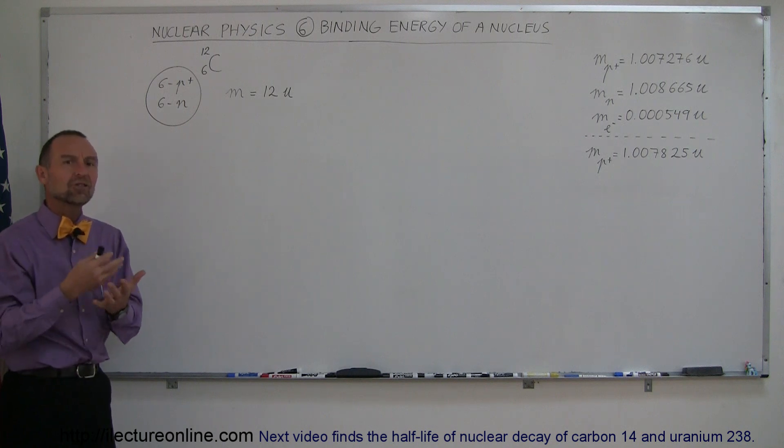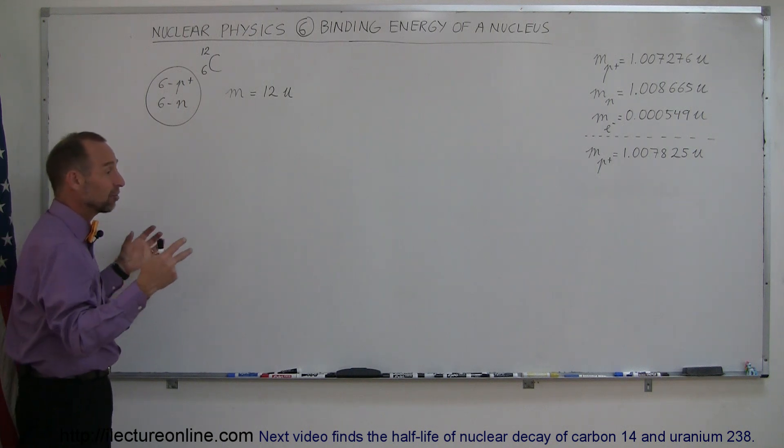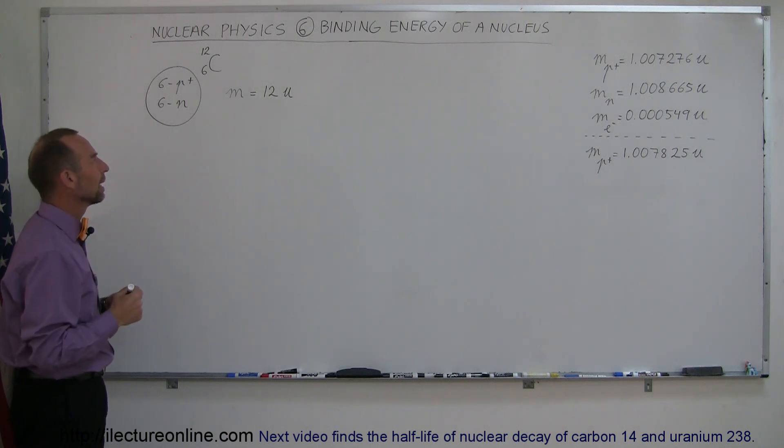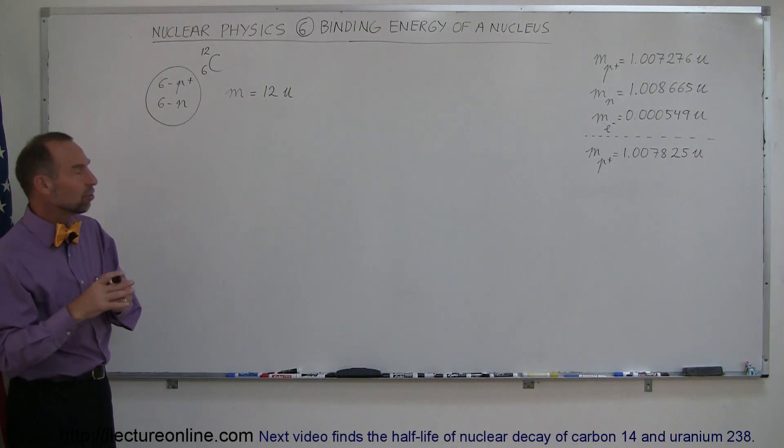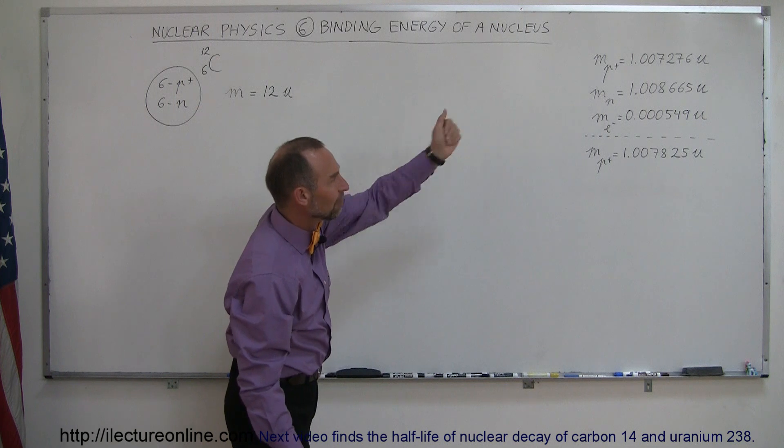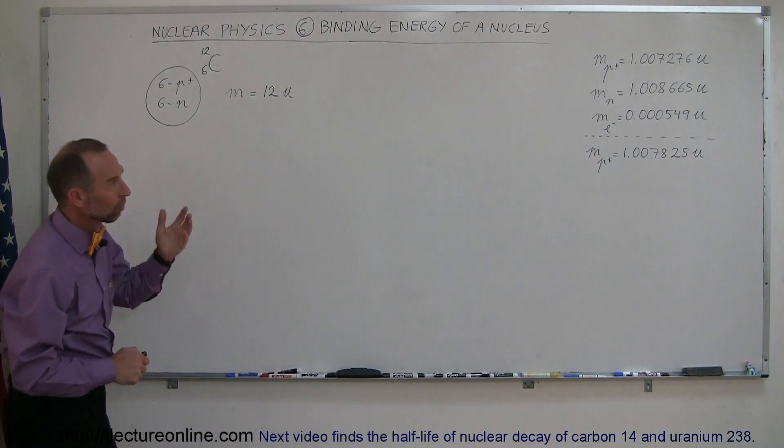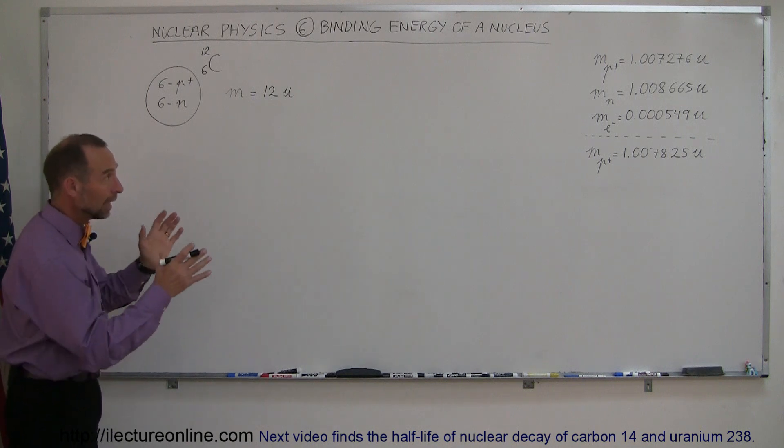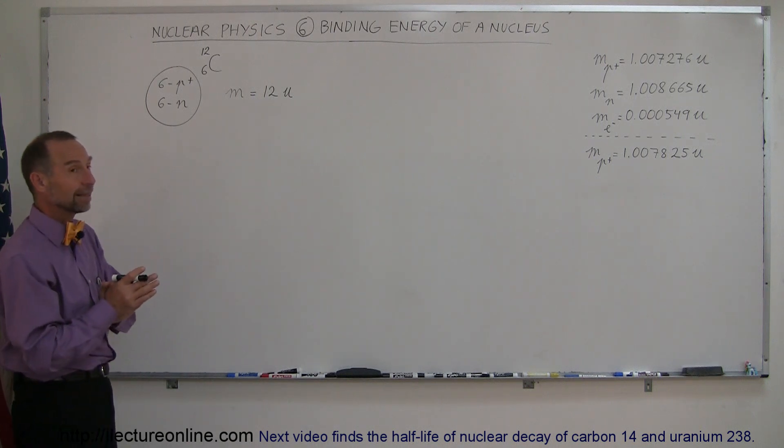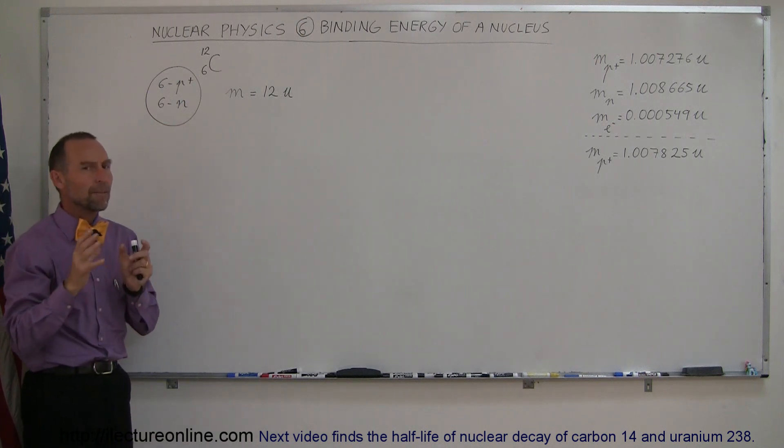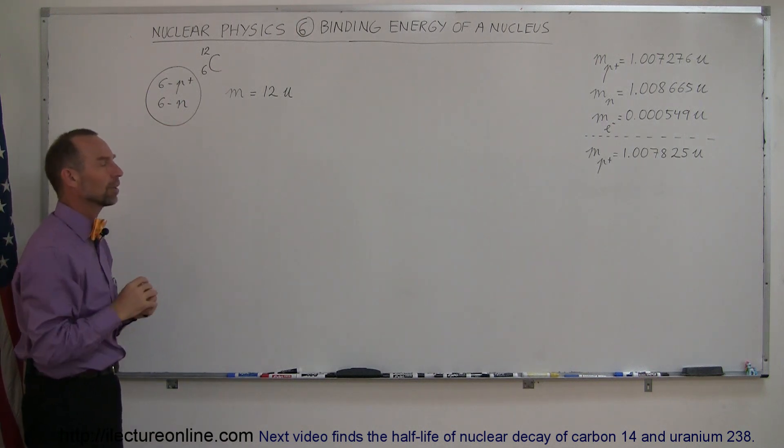But where does the energy come from to hold it together? Because you can't just say here it is, stay together, something has to overcome that repulsive force. And so what we found was that when we take the individual constituents of a nucleus and add up the masses, the proton, the neutron, and the electrons around the nucleus, if you add those together you find out that they have more mass separate than when you combine them together. So somehow mass is lost when you put a nucleus together.